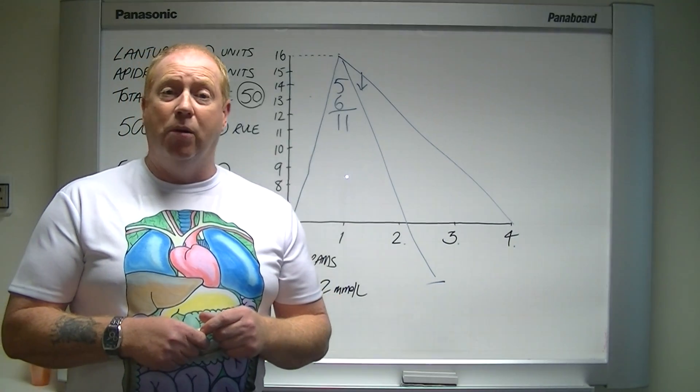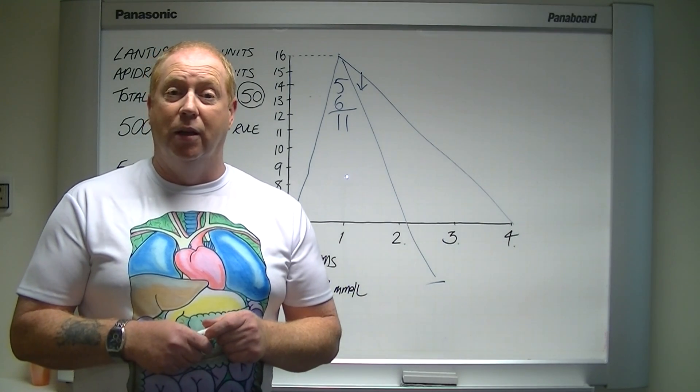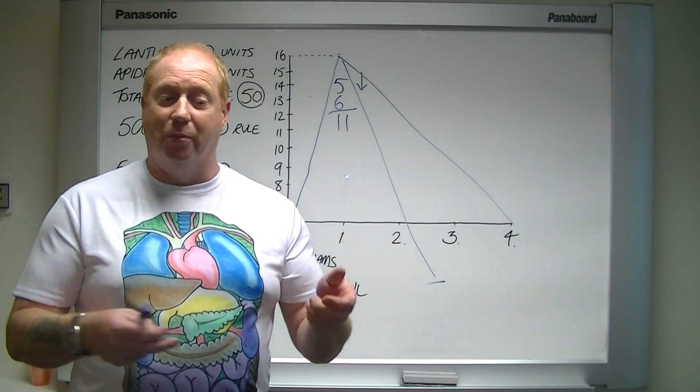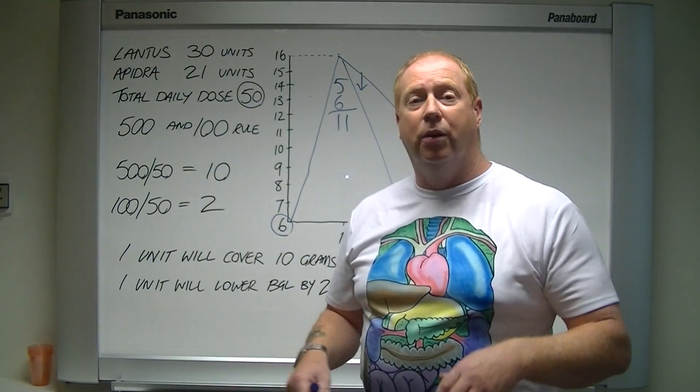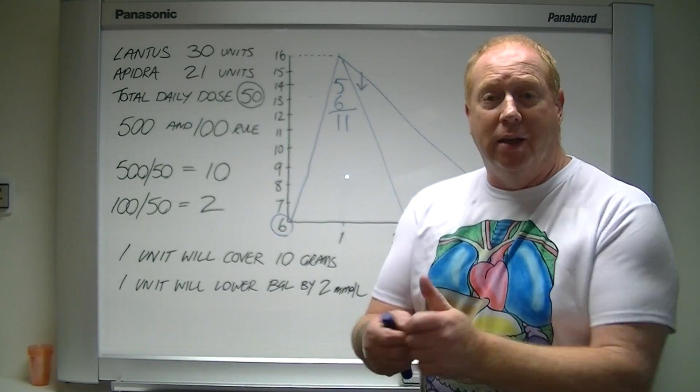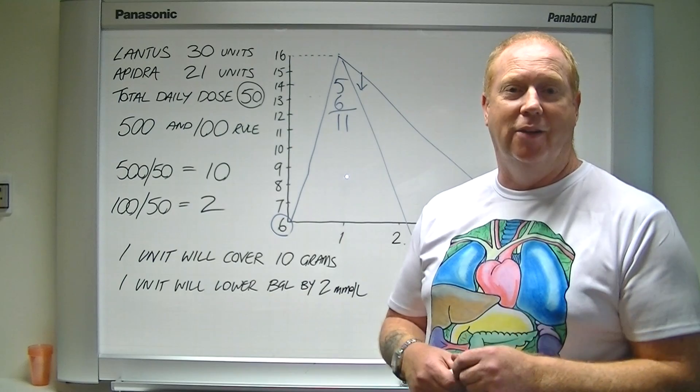Alternatively, you can use a bolus calculator, such as the Aviva Expert, which will do it all for you. All you do is prick your finger. It's got these formulas in there, the 100 and 500 rule, and then you tell it what you're eating in grams and it will calculate how much insulin to give yourself at mealtime.